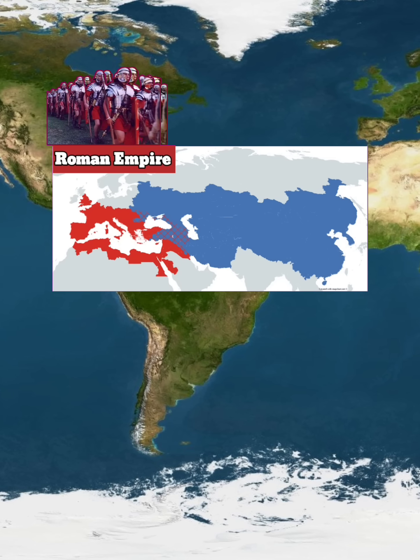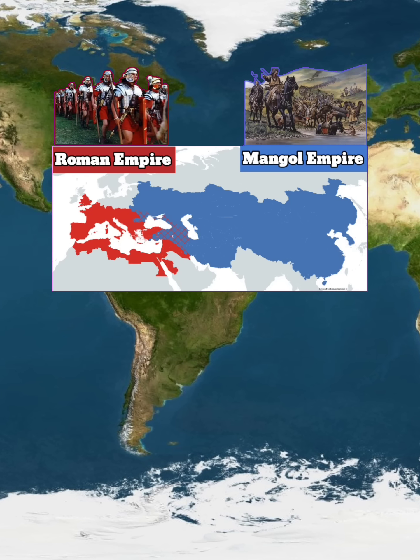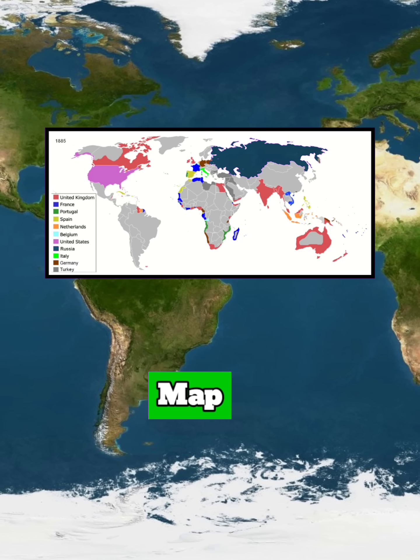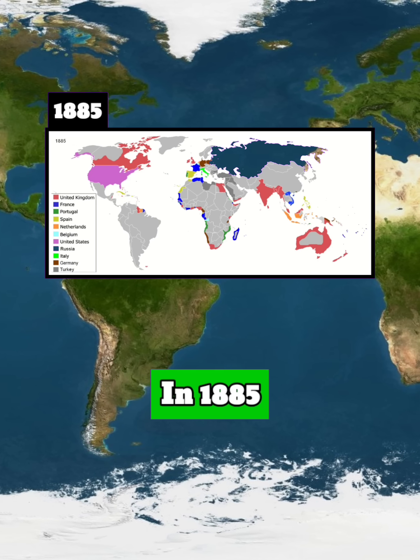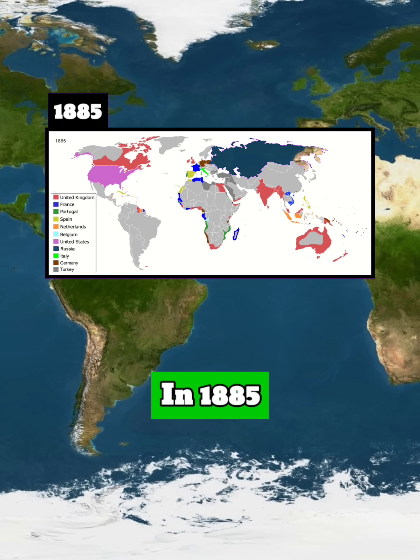This is the size of the Roman Empire and the Mongol Empire at their peaks. This is the map of colonization in 1885.